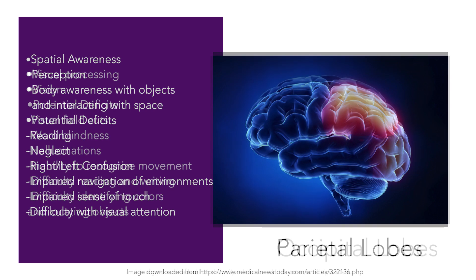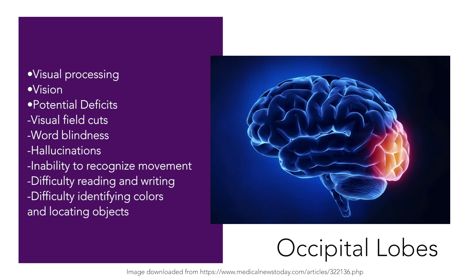At the back part of the cerebral cortex, we find the occipital lobe. This is primarily where visual processing is taking place. Damage to this area can cause a variety of problems as well, including visual field cuts, hallucinations, difficulty identifying words, colors, and locating objects.